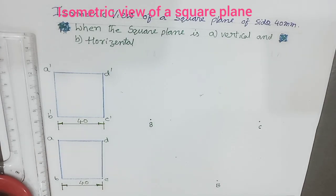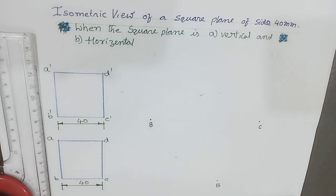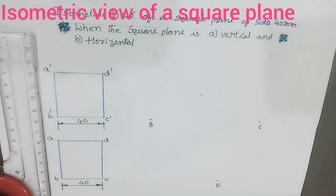Welcome to the discussion of isometric projections. Under isometric projections, we will discuss how to draw the isometric view of a square when the square plane is vertical as well as when the plane is horizontal.